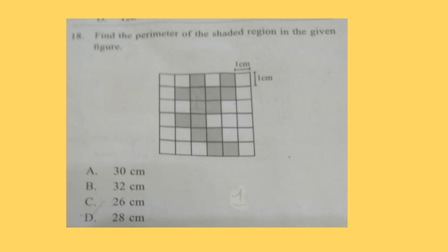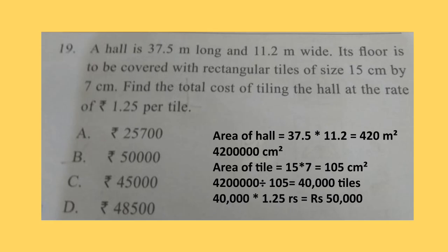Question 19: A hall is 37.5 meters long and 11.2 meters wide. Its floor is to be covered with rectangular tiles of size 15 centimeter by 7 centimeter. Find the total cost of tiling the hall at the rate of rupees 1.25 per tile. Solution is given here, you can see how it is solved. Correct answer is option B, rupees 50,000.